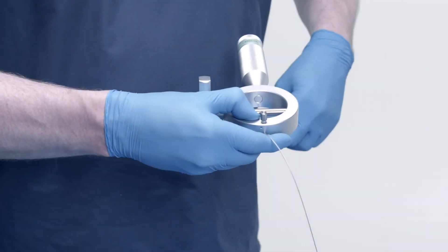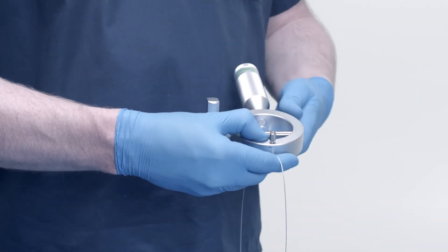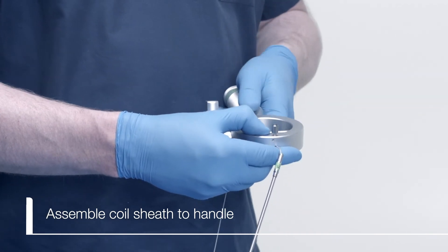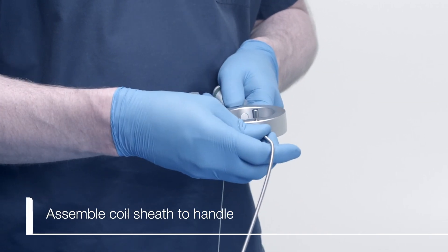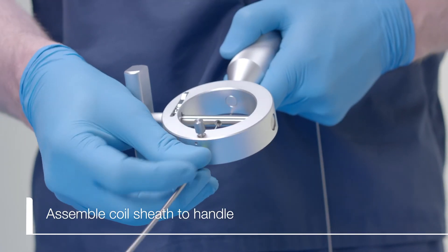Insert the green proximal end of the coil sheath into the hole at the top of the emergency Lithotripsy handle. Lock the sheath in place by turning the thumb screw clockwise as shown.